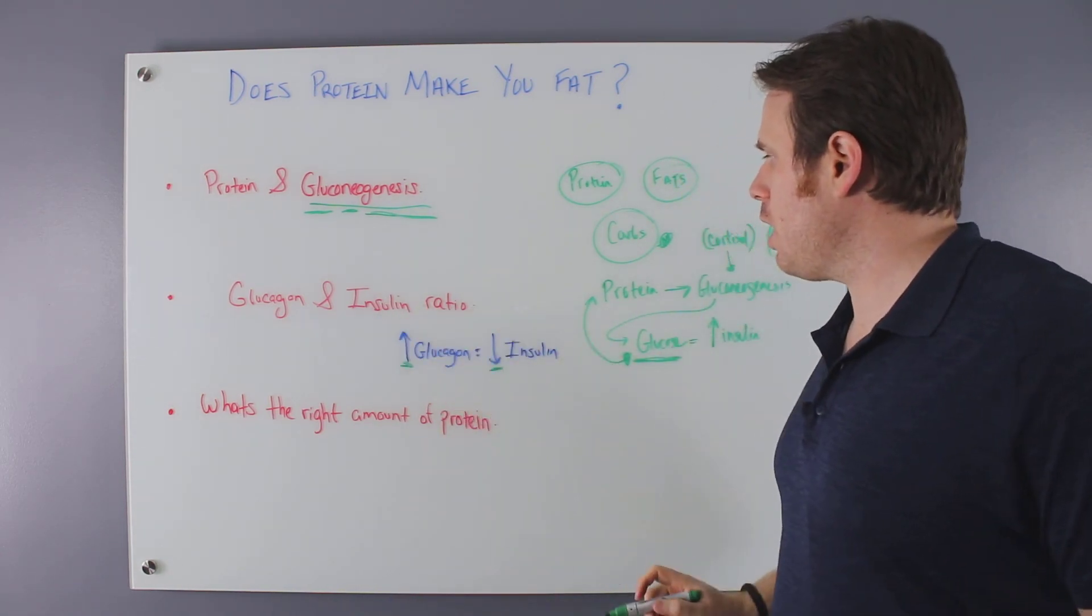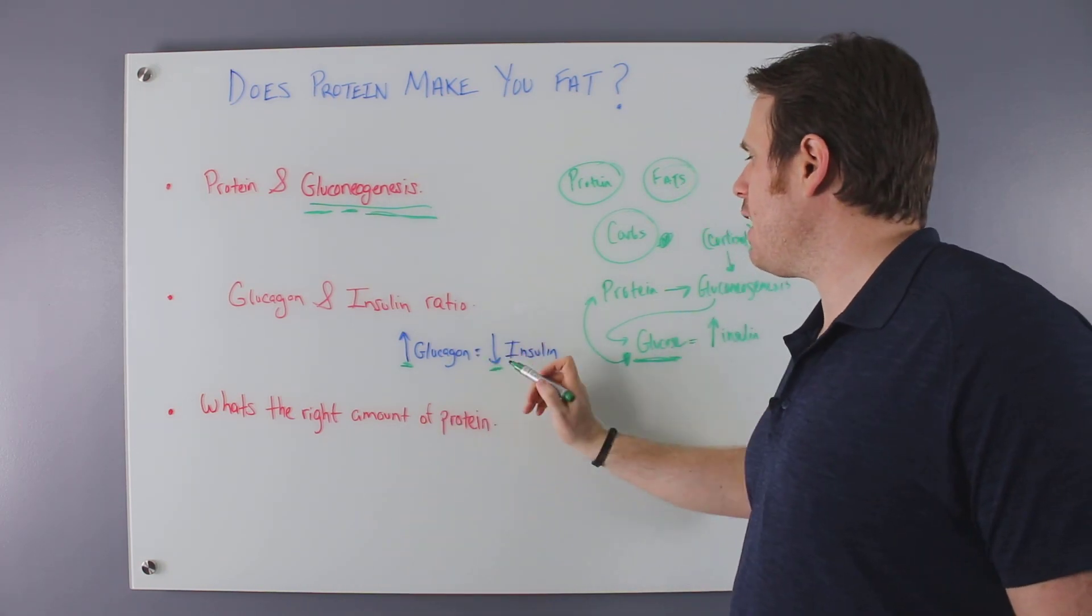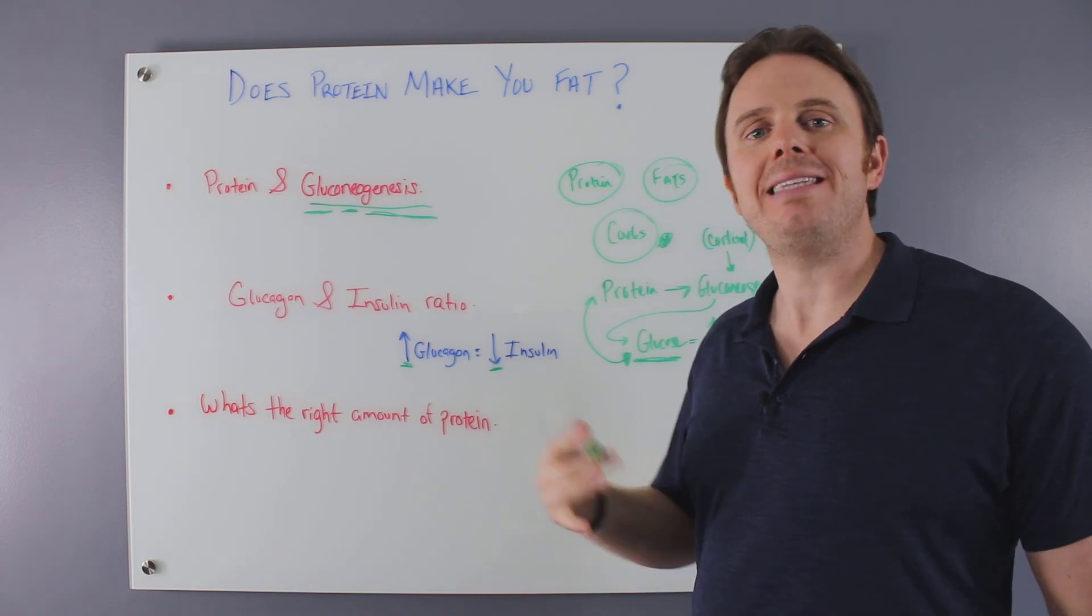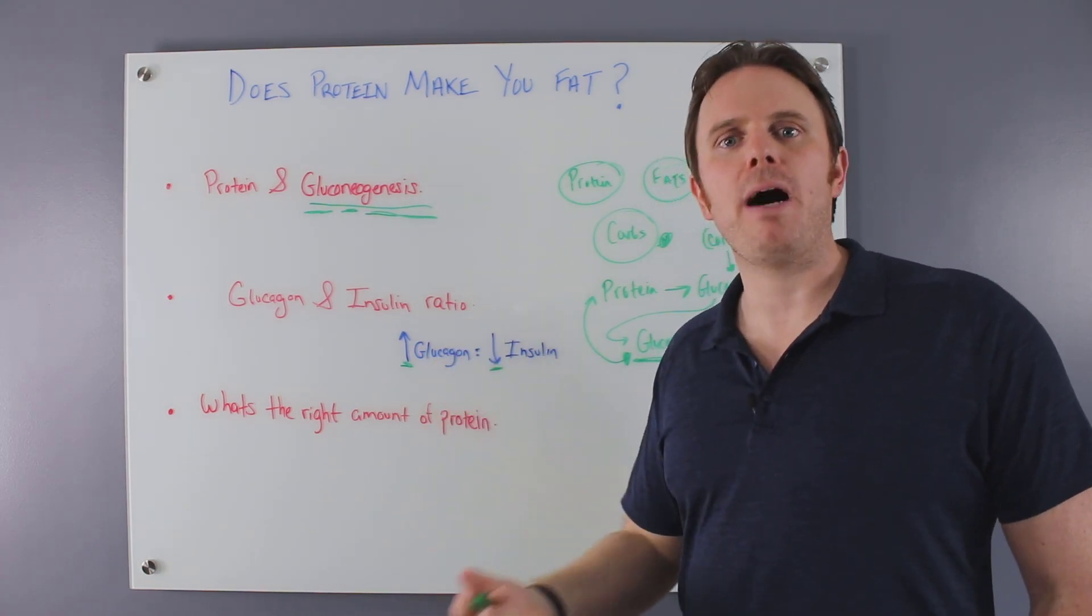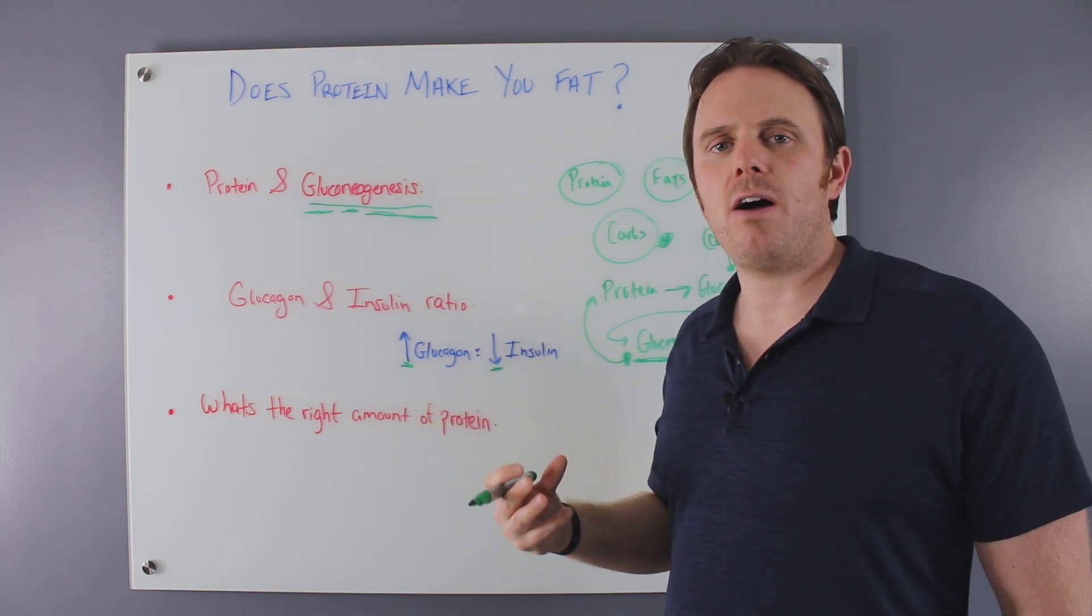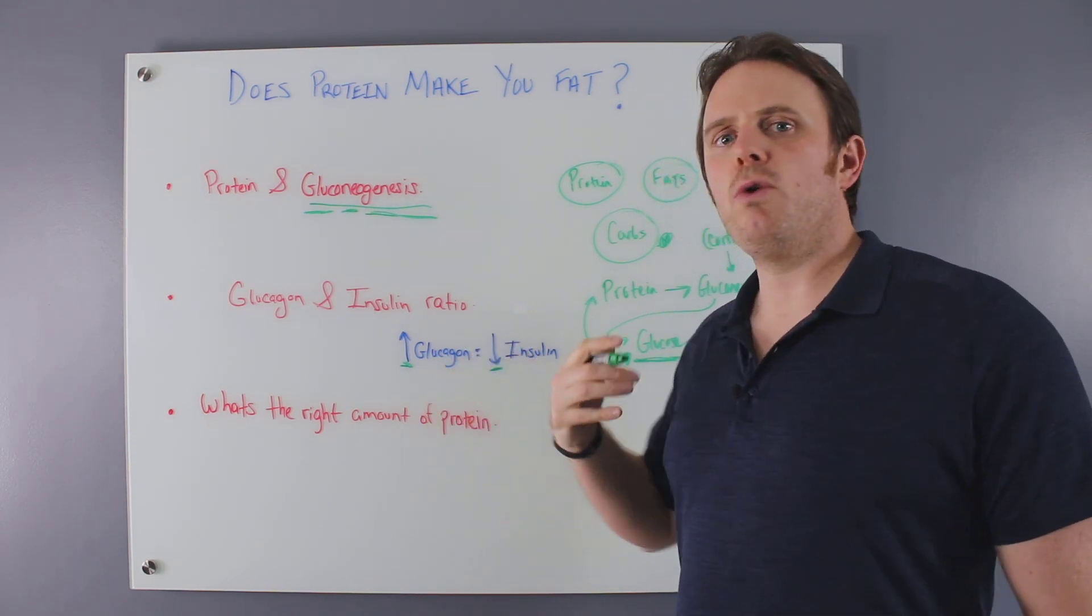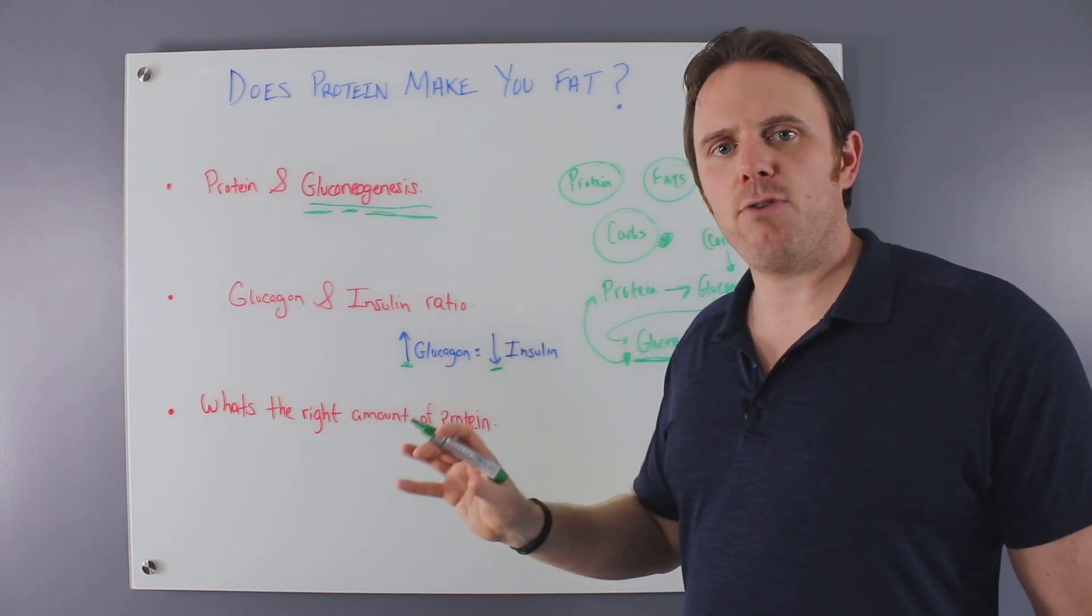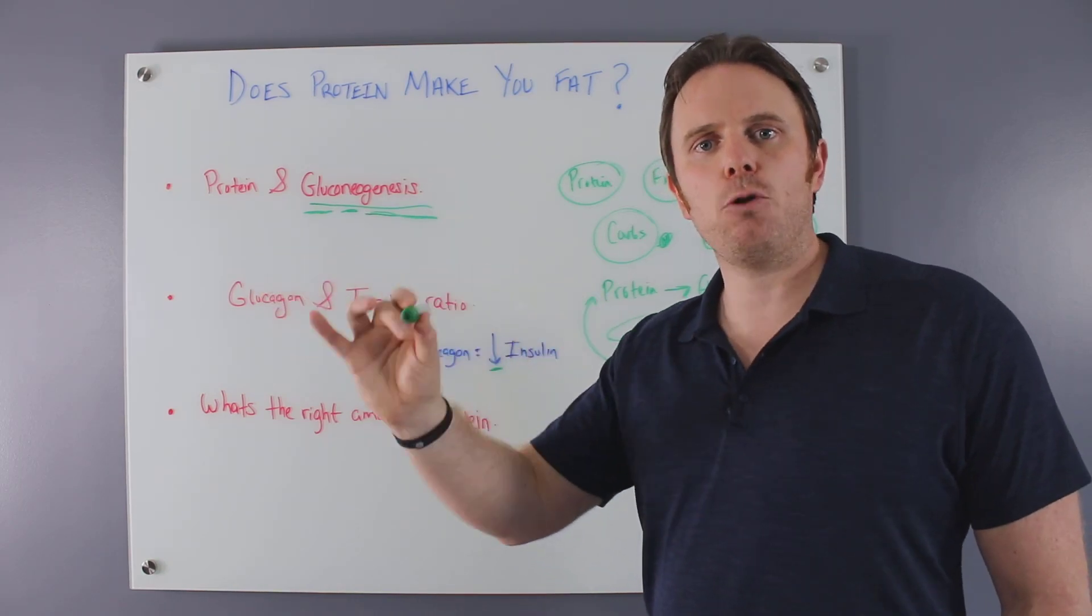So this insulin to glucagon ratio is real. It's an important thing. People that tend to have lower insulin and less glucagon, it tends to be a good thing. The Eades talk about this in Protein Power. Dr. Diana Schwarzbein talks about this in the Schwarzbein Principle. And this is how people who eat protein and keep their carbohydrates relatively down maintain their blood sugar.